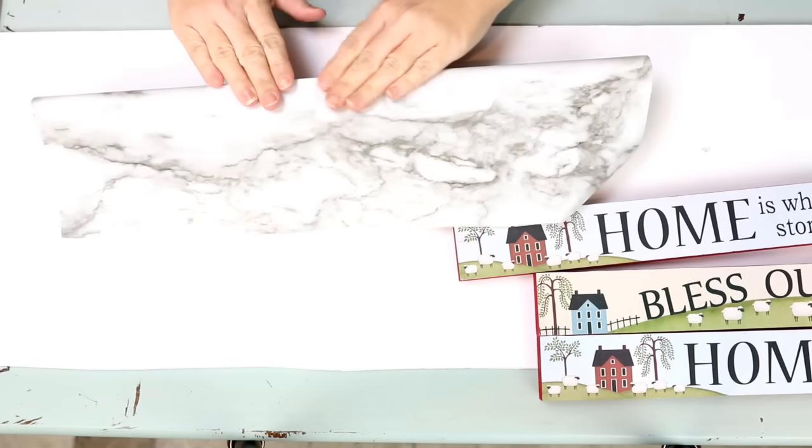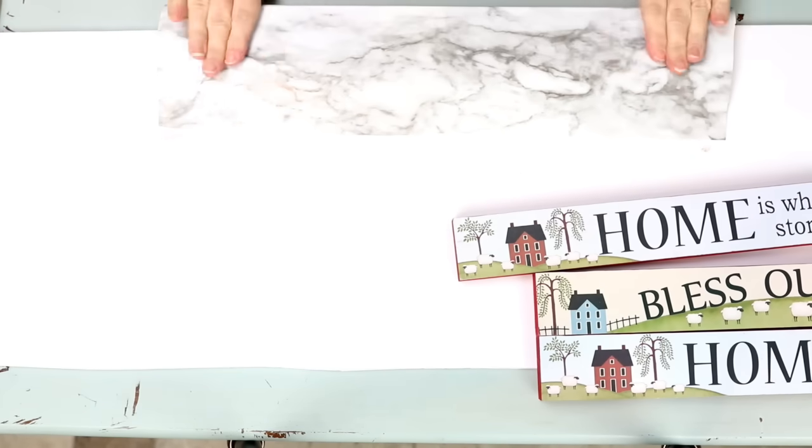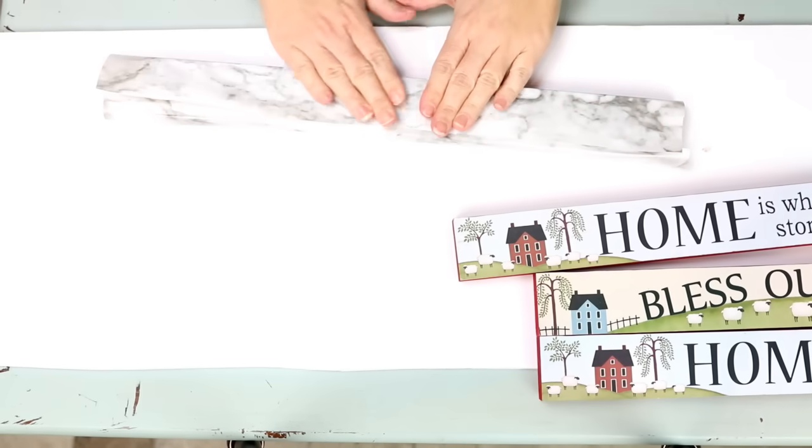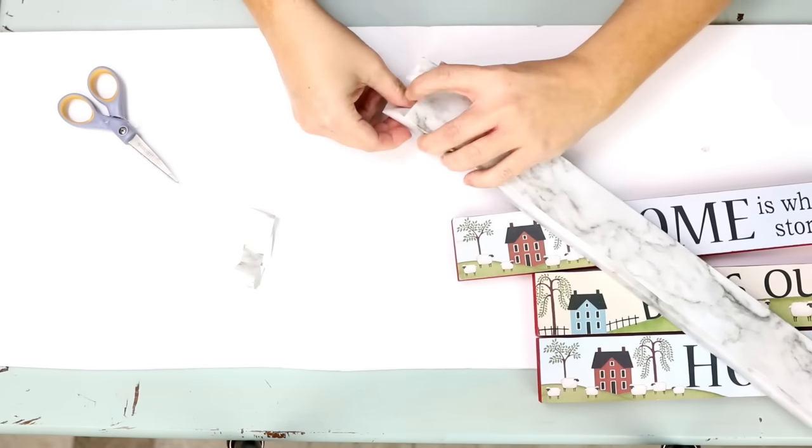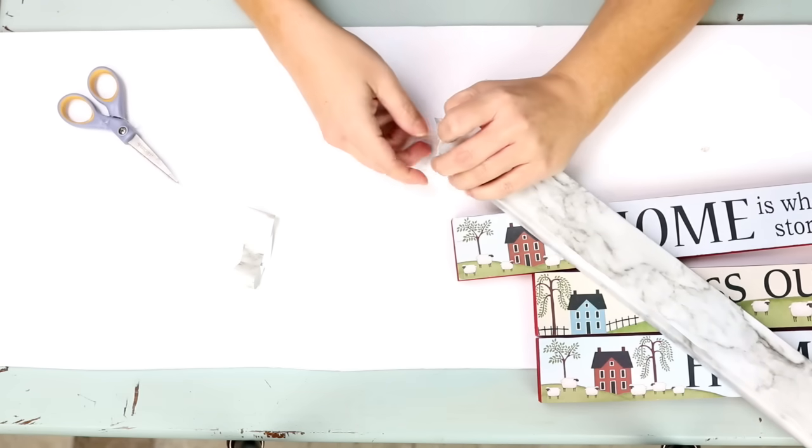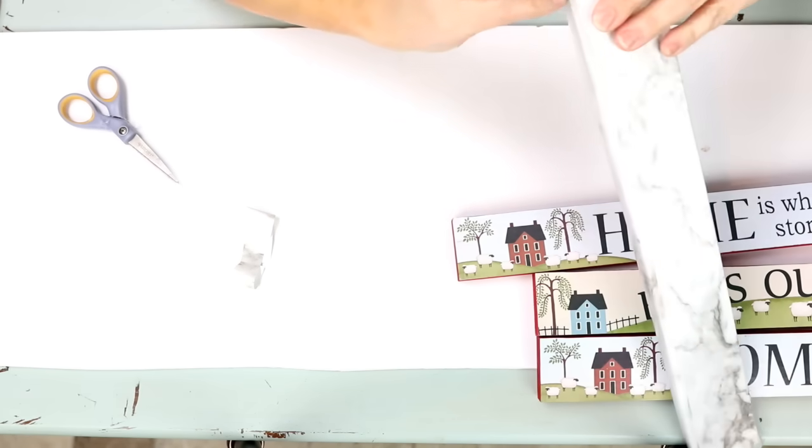So I'm just going to wrap the paper around both of these edges. And the key here is just take your time. Go slow. Do a side and then turn it. And then do another side making sure you get all the bubbles out before you continue. And then on the ends I'm just going to wrap them up like a present. And if you need any additional hot glue just use some hot glue on the end to hold it in place.